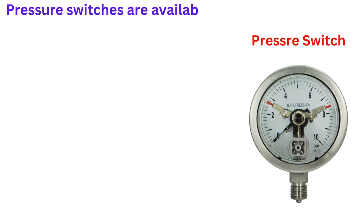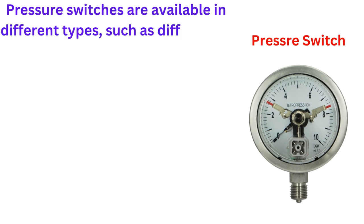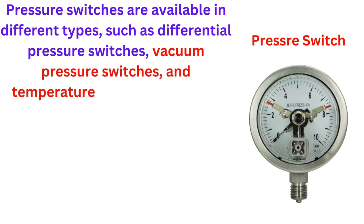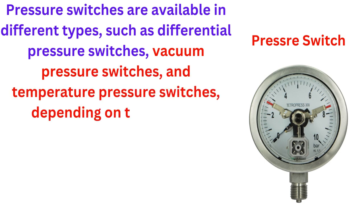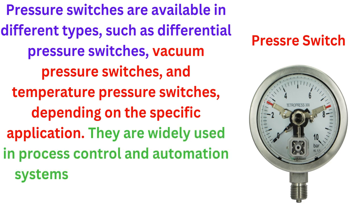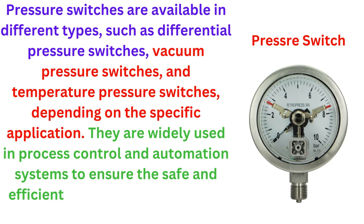The pressure switch consists of a sensing element, typically a diaphragm or a piston, that responds to changes in pressure. The sensing element is connected to a mechanical switch, which opens or closes an electrical circuit when the pressure threshold is reached.